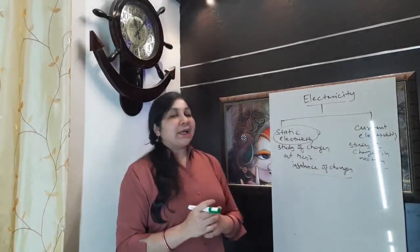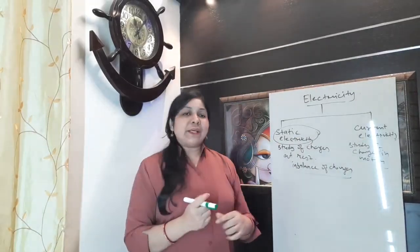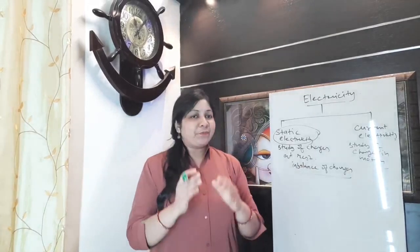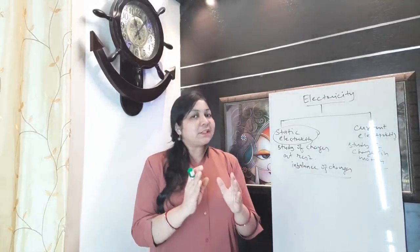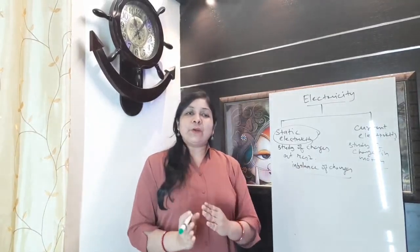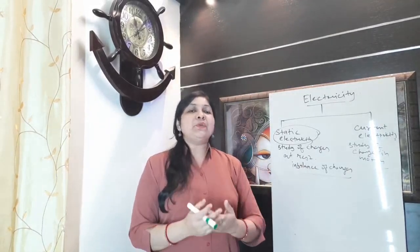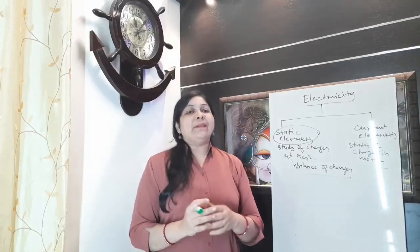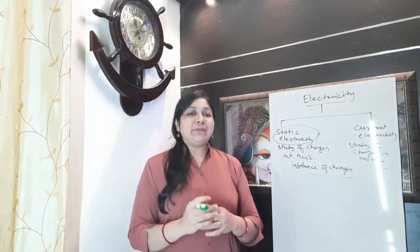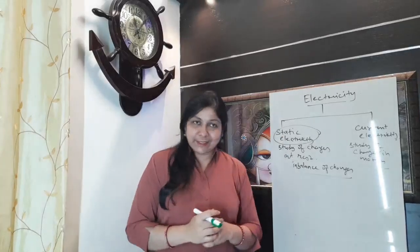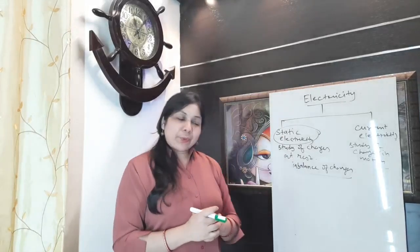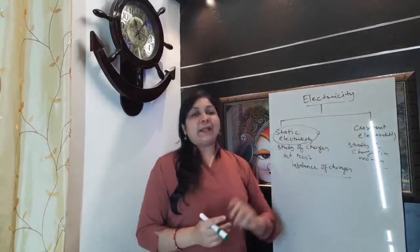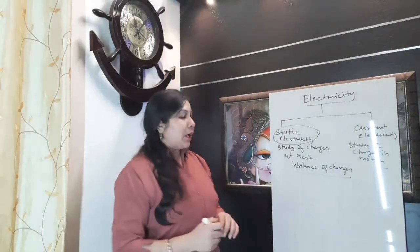Static electricity is produced because of the imbalancing of charges. When we imbalance the charges on an object it produces an electric field around it, and that electric field we can use as static electricity. So static electricity and current electricity are done, and now we will start our next topic.